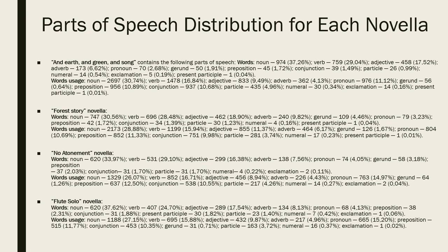Novella RI2, First Story. Words: Noun 747, 30.56%, Verb 696, 28.48%, Adjective 462, 18.90%, Adverb 240, 9.82%, Gerund 109, 4.46%, Pronoun 79, 3.23%, Preposition 42, 1.72%, Conjunction 34, 1.39%, Particle 30, 1.23%, Numeral 4, 0.16%, Present participle 1, 0.04%.